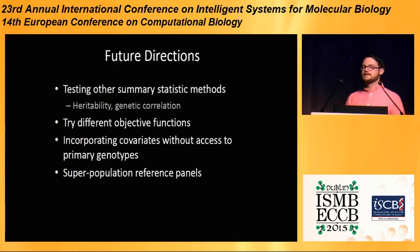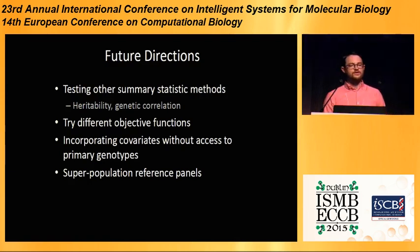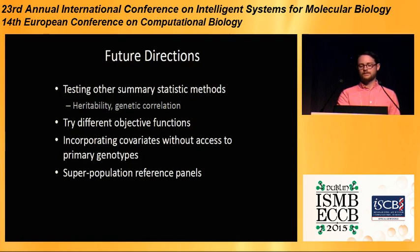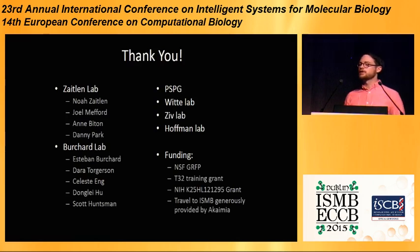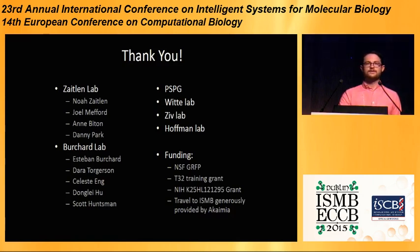In future work, we'd like to test other summary statistic-based methods such as estimating heritability and genetic correlation, try different objective functions for evaluating our work, and try to incorporate covariates without access to primary genotypes or without needing a specific study procedure. Thank you for your time. I'd like to thank everyone that worked on this project in the Zaitlin Lab, the Bouchard Lab, and everyone else that listened to us. Particularly, I should thank Danny Park — he's the main author of this work but couldn't attend this session.